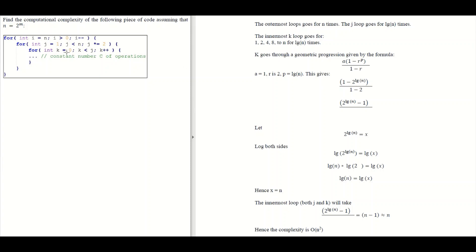To find p, we look at the j loop. We established that j runs for log n base 2 times, so this entire combined loop also happens log n base 2 times. It is log n base 2 because we multiply by 2 each time — if we multiplied by 3 it would be log n base 3. So we set p = log n base 2.